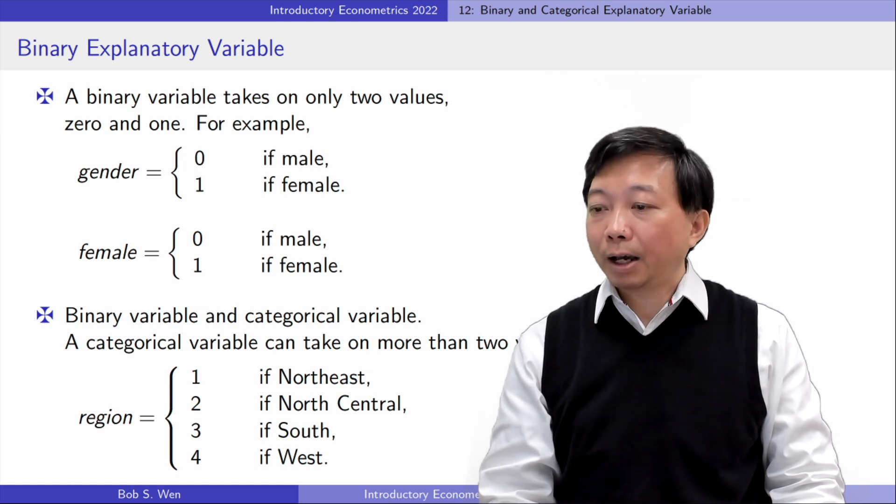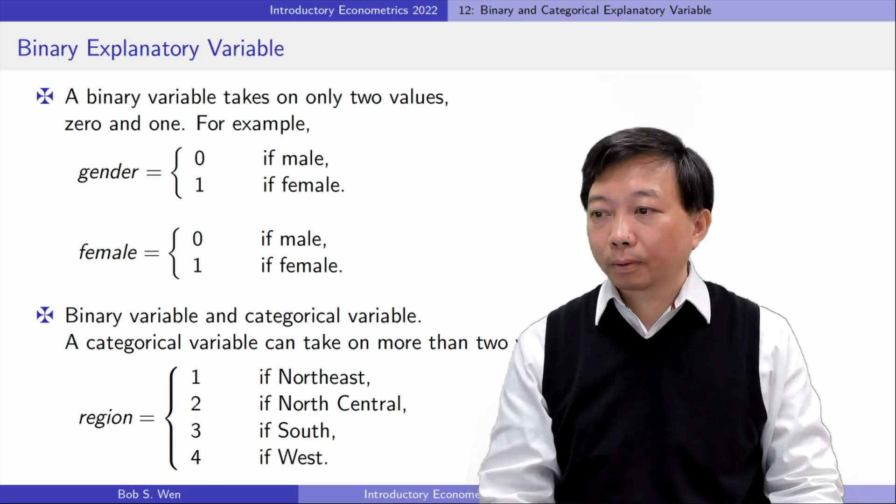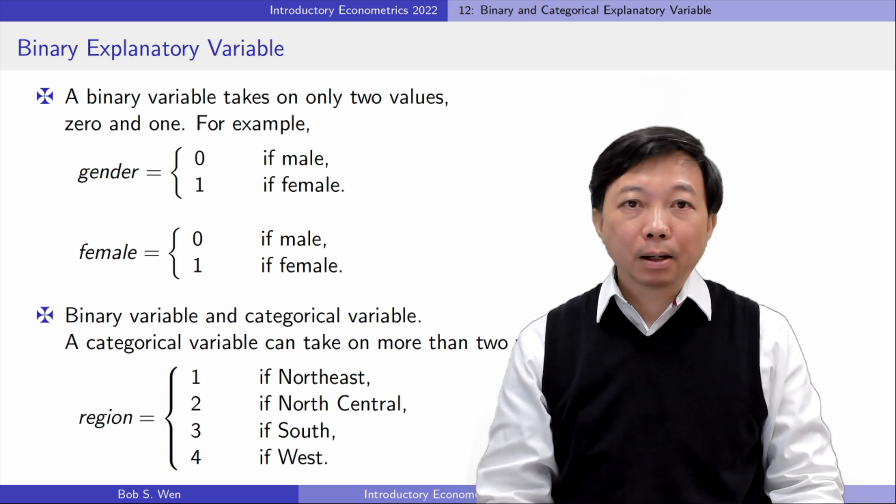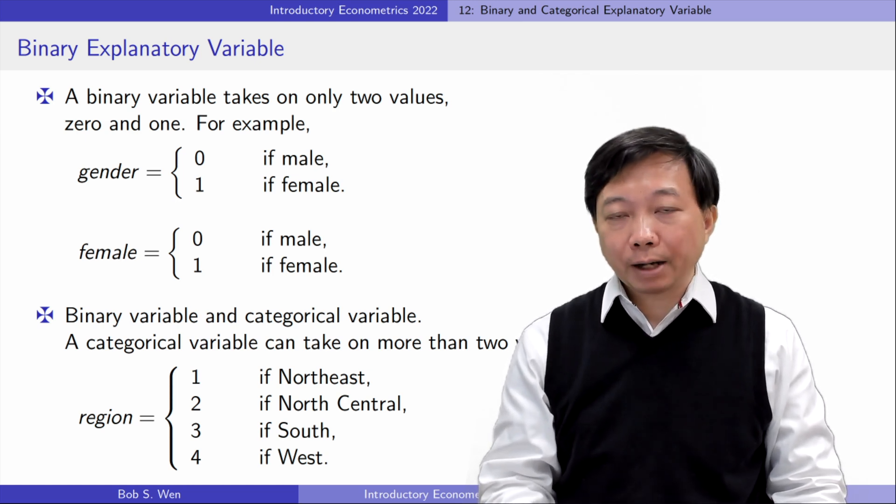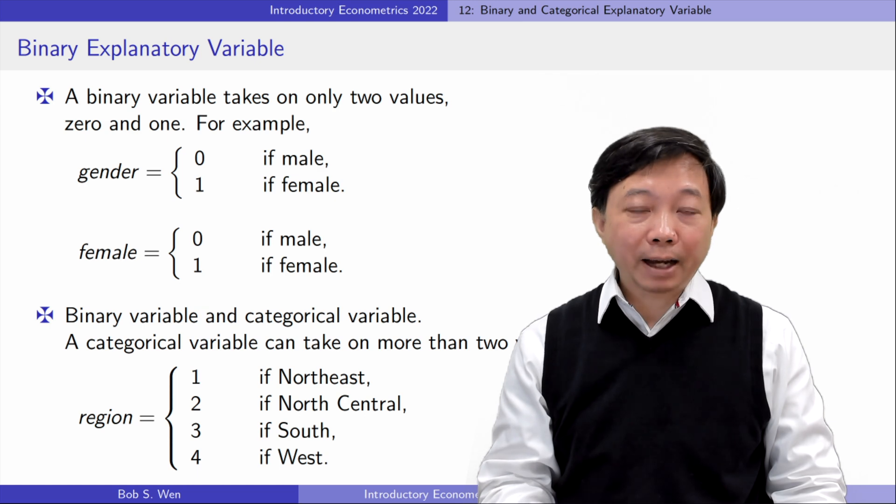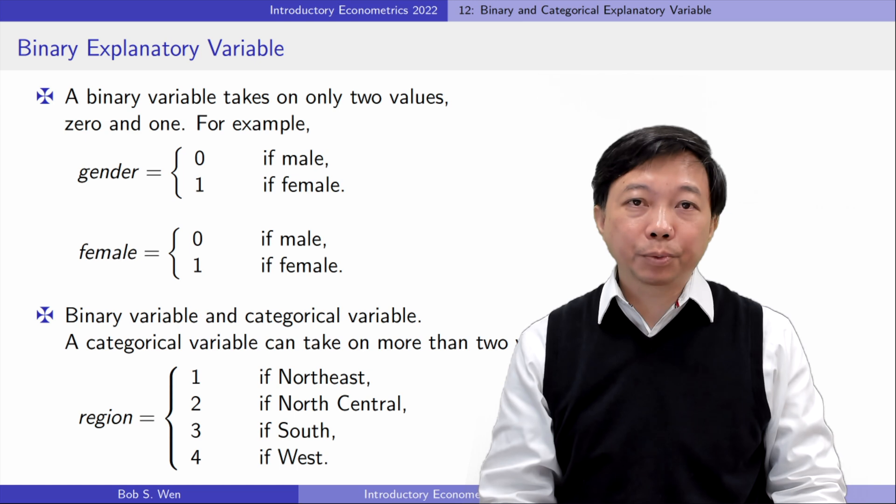Each value represents a category of the geographic region. The binary variable has only two categories, while the categorical variable can divide the data into more than two groups.